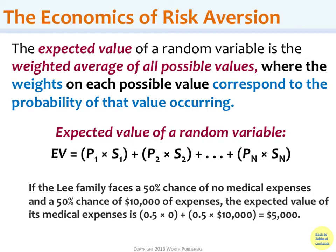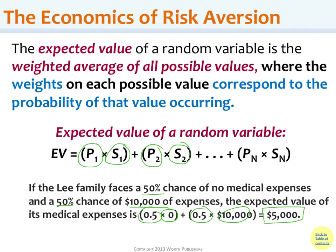For instance, if the Lee family faces a 50% chance of no medical expenses and a 50% chance of $10,000 in medical expenses, you take the probability weight of 50% times each state and add them up so they total 100%. So 50% of $0 plus 50% of $10,000 gives an expected cost for the Lee family of $5,000.